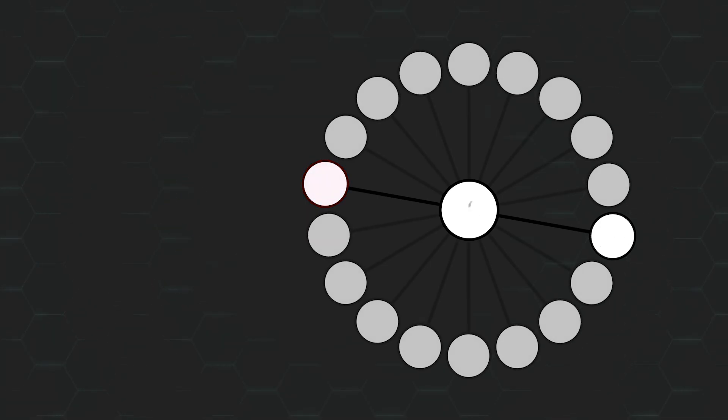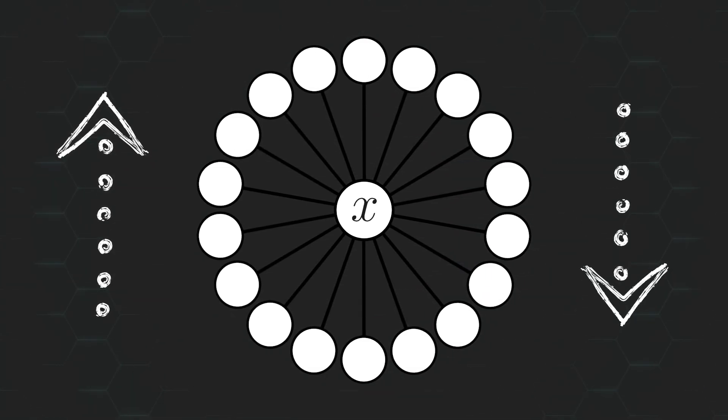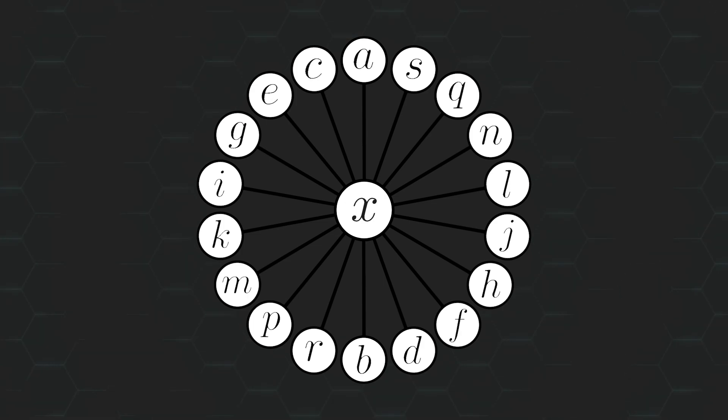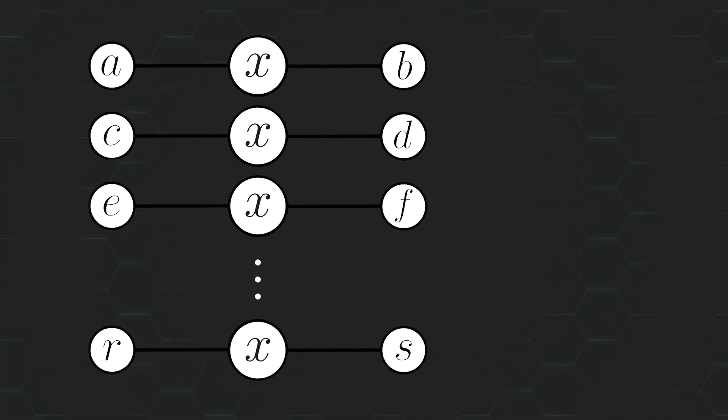So where do we go from here then? All we know is that the central number can't be too large, nor can it be too small. Well, let's fill the circles up with some variables and write all our sums as a system of 9 equations to get a better feel for what's going on first.